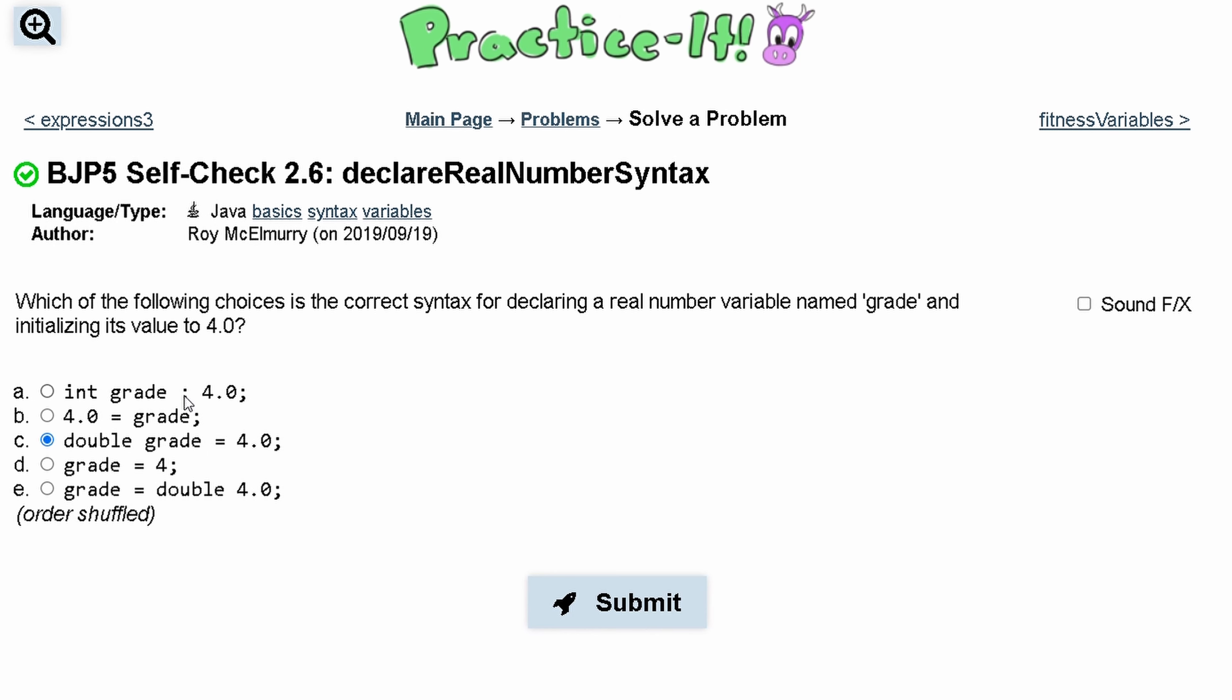We notice that A cannot be the correct choice because it has a colon and D cannot be the correct choice because it's not 4.0. So we're only left with B, C, and E.